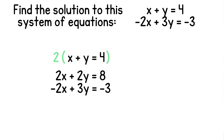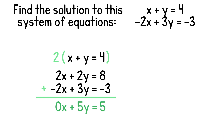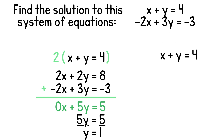Now we'll bring down our second equation so we can add them together. 2x plus negative 2x gives us 0x, and 2y plus 3y gives us 5y, and 8 plus negative 3 gives us positive 5. Now we can simplify and solve: we'll isolate y by dividing 5 on both sides, giving us y equals 1. Now we'll take the first equation in our system to find our other variable. Replacing y with 1 gives us x plus 1 equals 4. Subtracting 1 on each side gives us x equals 3. So the solution to this system is (3, 1).